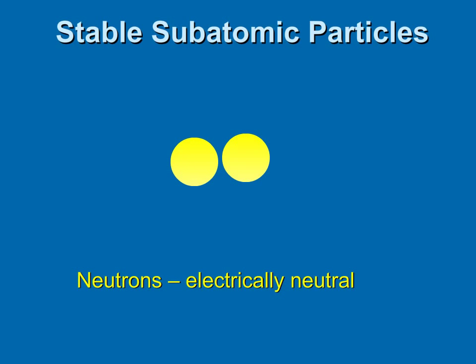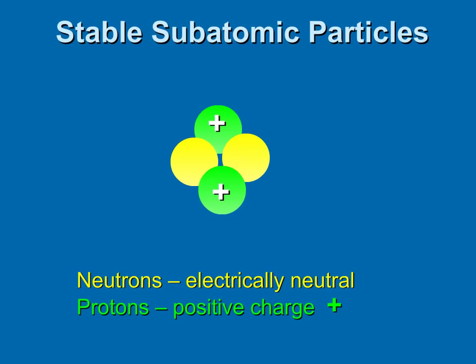The first are neutrons, which are found in the nucleus, the center of the atom, and have no charge. This means they are electrically neutral. The next are protons, that are also found in the nucleus of the atom, but they have a positive electrical charge.